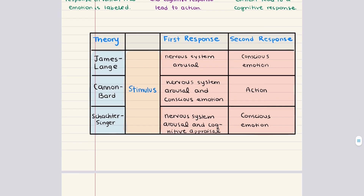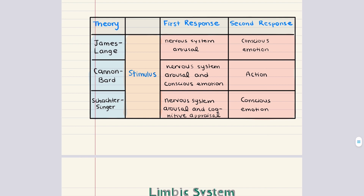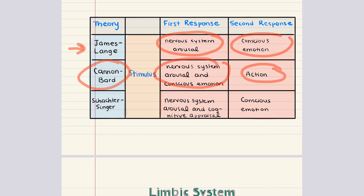To summarize the three theories: for James-Lange, the first response to a stimulus is nervous system arousal, and the second response is conscious emotion. For Cannon-Bard, the first response is nervous system arousal and conscious emotion simultaneously, and the second response is some sort of action. For the Schachter-Singer theory, the first response is nervous system arousal and cognitive appraisal, and the second response is conscious emotion.